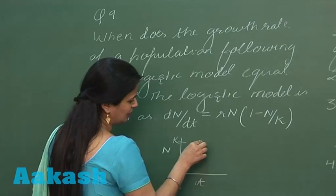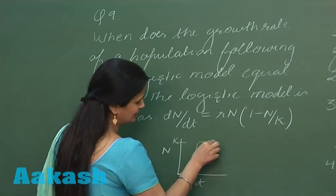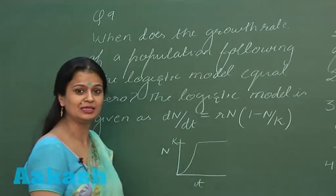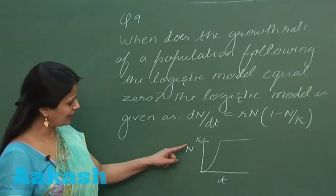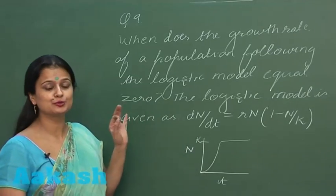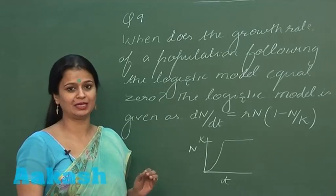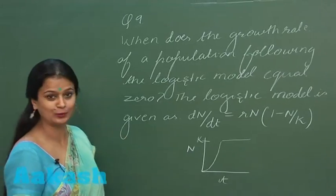...the population size becomes constant near the maximum or carrying capacity of the habitat. So when N is equivalent to K, the growth rate becomes zero. Now we can look...